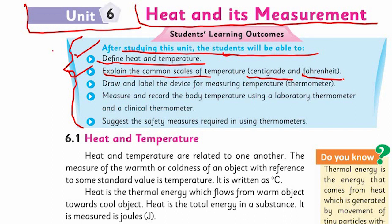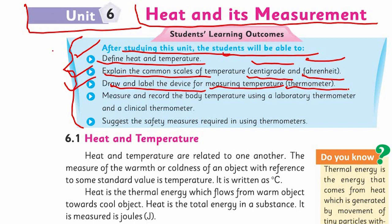It would be even better if you can also cover Kelvin, but the book has given these two scales: Centigrade and Fahrenheit. SLO number 3 is to draw and label the device for measuring temperature. The device for measuring temperature is the thermometer — you should be able to draw and label a thermometer.